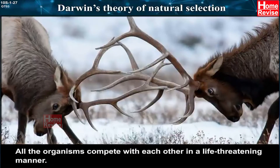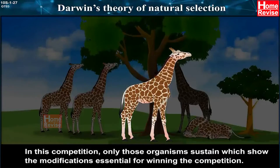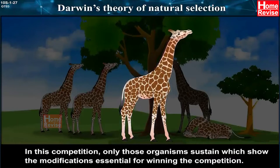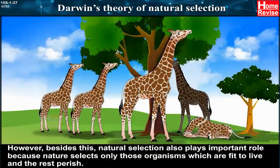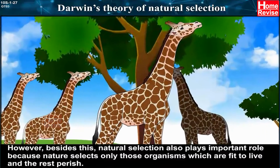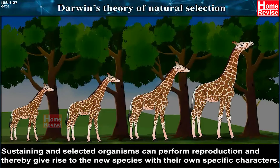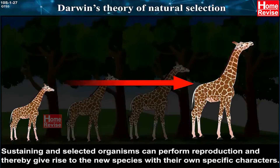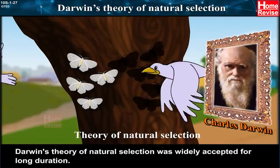All organisms compete with each other in a life-threatening manner. Only those organisms that show the modifications essential for winning the competition would sustain. Natural selection also plays an important role because nature selects only those organisms which are fit to live, and the rest perish. Sustaining and selected organisms can perform reproduction and thereby give rise to new species with their own specific characters. Darwin's theory of natural selection was widely accepted for a long duration.